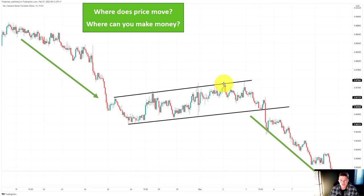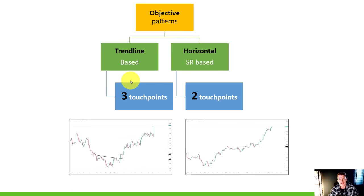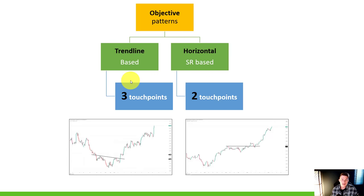Here we have one, two, three, four, five touch points — this is not random anymore. If we only had two that would be too random, but with three, four, or five that shows us a valid pattern. This matters because if we want to trade breakouts, pullbacks, or liquidity runs, we need the level the market is actually respecting. A valid, well-respected breakout level means many other traders are watching it too, making a profitable trade around it much easier and more objective.